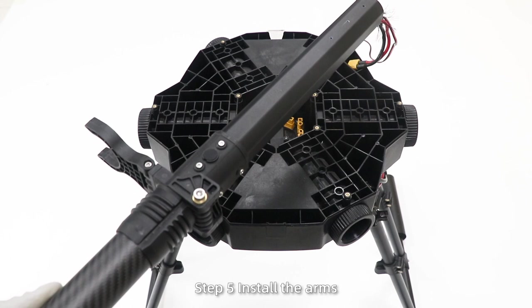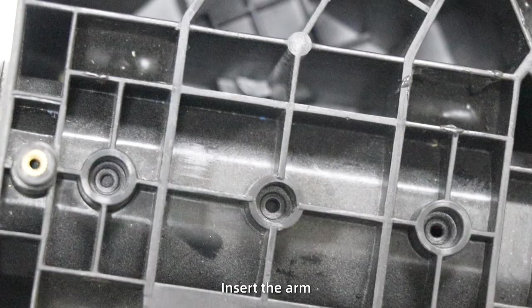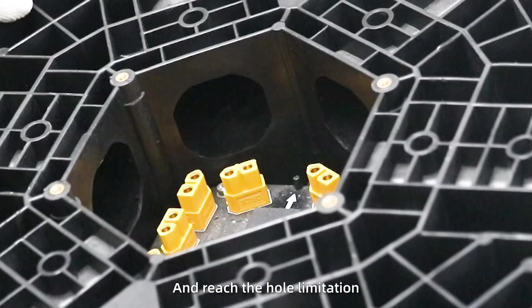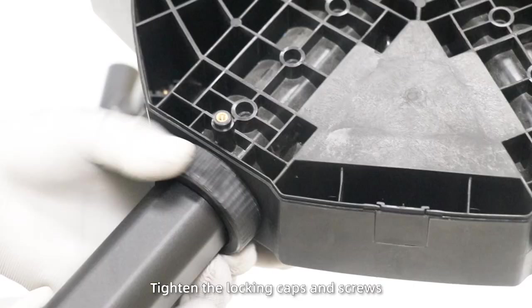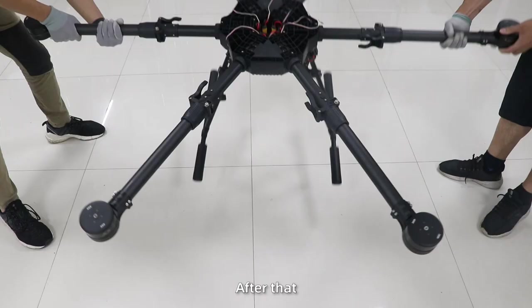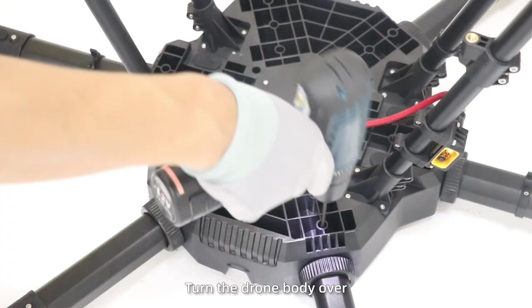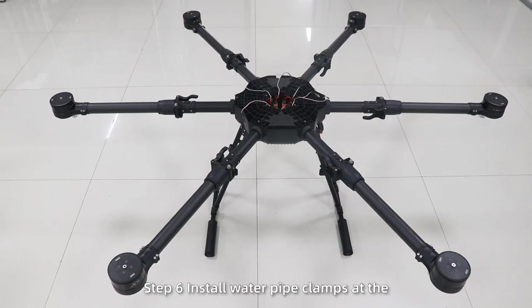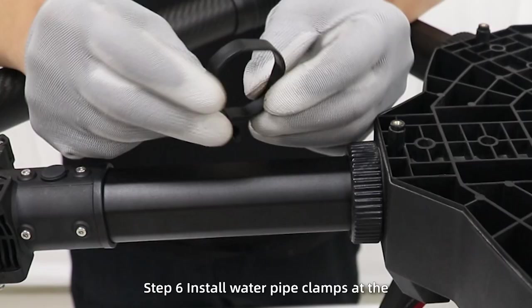Step 5: Install the arms. The screw side faces up. Remove the locking clip, insert the arm. Make sure the holes are aligned and reach the hole limitation. Fix the plugs, tighten the locking caps and screws. Then install the rest of the arms. After that, turn the drone body over and fix the screws.